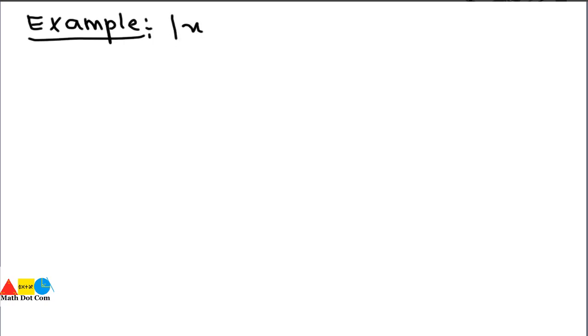Let's look at one more example, in which we have absolute values on both sides of the equation. The example is: |x + 2| − 3 = 5 − |x + 2|. This is a slightly different type of equation.